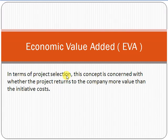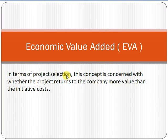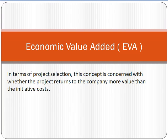EVA is a methodology used for project selection and serves as an indicator. For example, if you have invested $10,000 and you are getting back $11,000, that means you are getting good value. But if you invested $10,000 and are getting back only $9,000, you are getting less value than the funds you invested. This is the main concept of Economic Value Added.